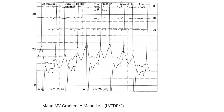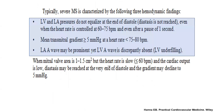One published equation takes mean LA pressure minus half of LVDP to estimate mean valve gradient. But you don't even need the gradient calculation — just the two features of no diastasis and the discrepancy between LA A-wave and LV A-wave.